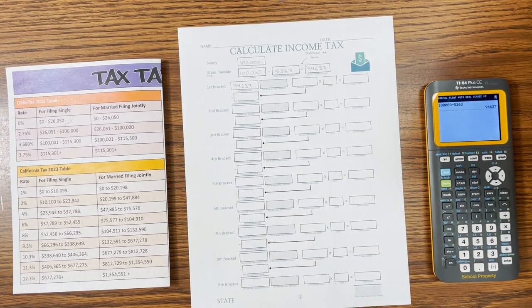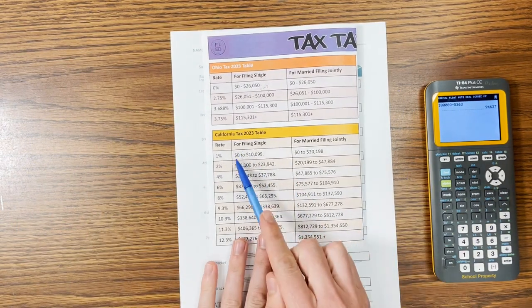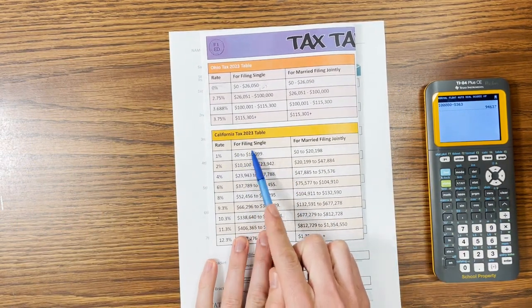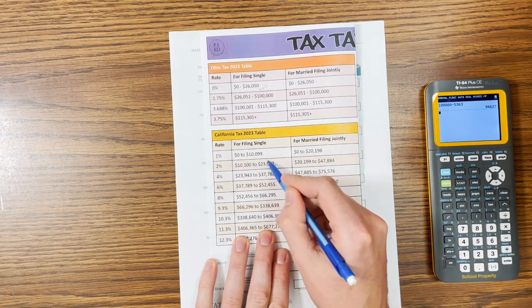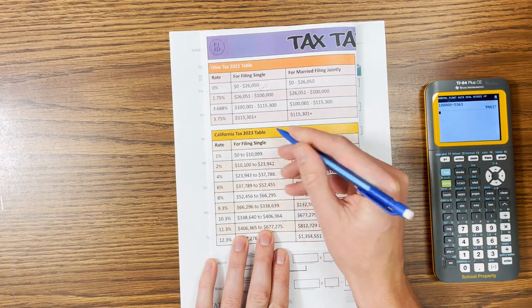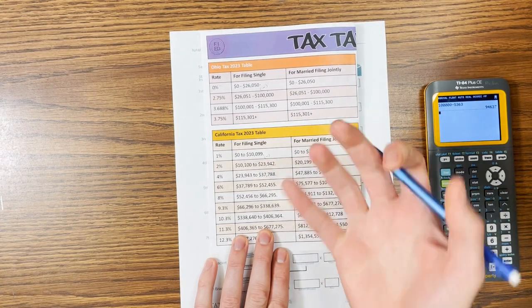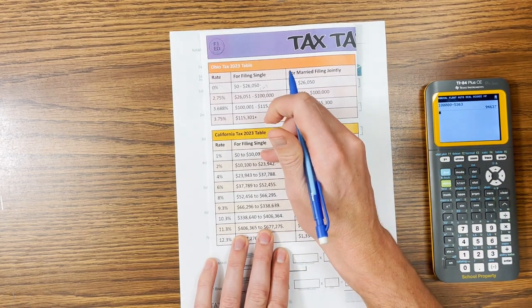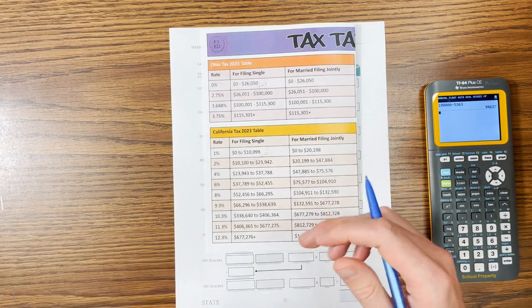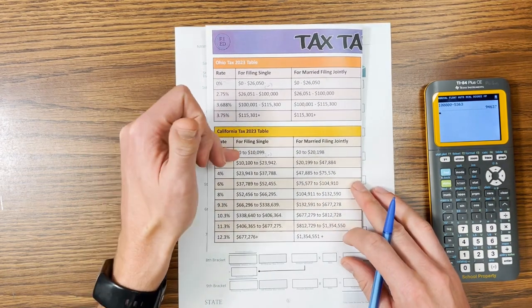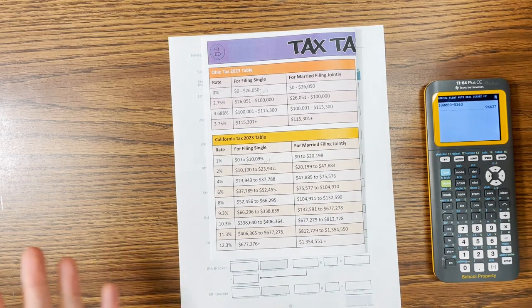Now we start looking at the brackets. So in the first bracket, it holds $10,099. And then for each one after that, we're going to look at the max amount and then subtract what we've already taxed. So you'll be subtracting the higher number in both rows essentially, so this number from this one. Some tables, when you look them up, will just tell you how much money it holds. A lot of tables will tell you from this dollar to this dollar, this to this one, this to this one, to kind of show that it's a progressive system.